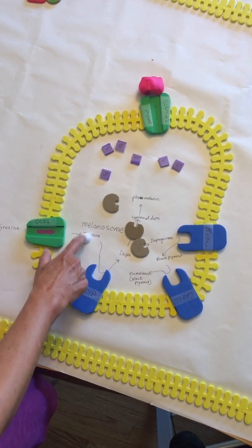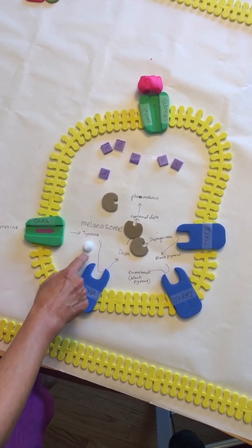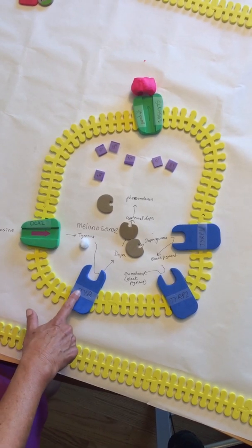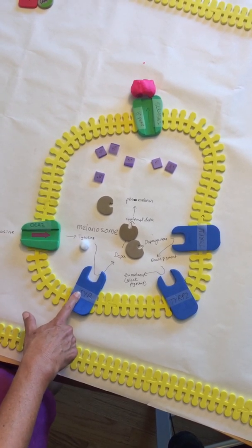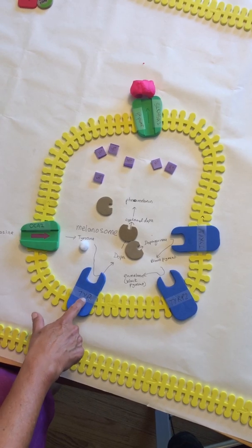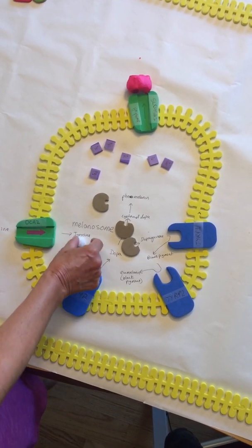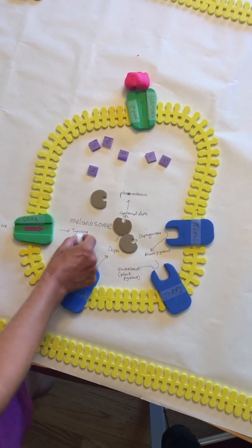Once you have tyrosine, the TYR enzyme—that's tyrosinase—takes the tyrosine and turns it into dopa. It goes into the active site, and when it comes out, it's a different molecule, which is dopa.